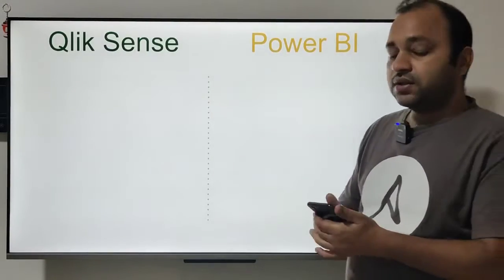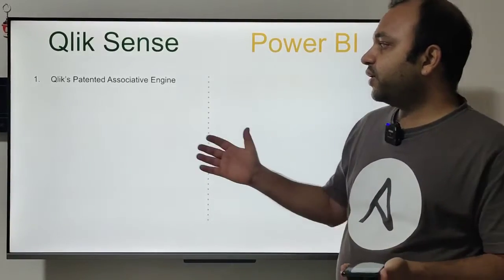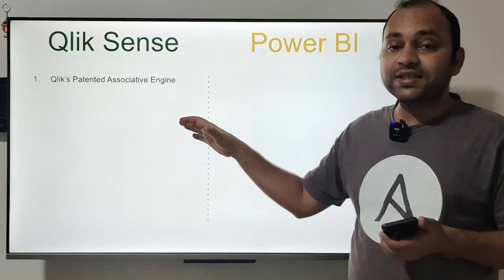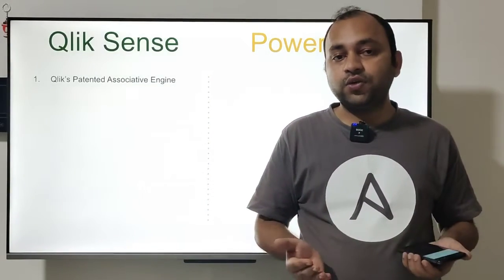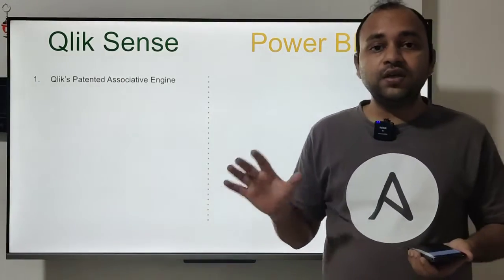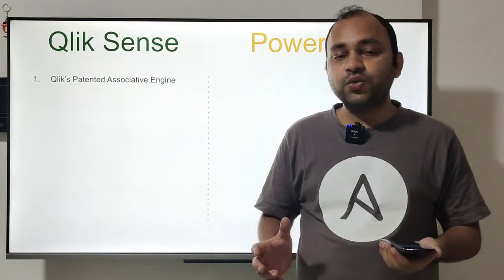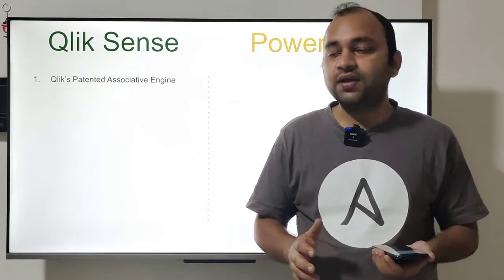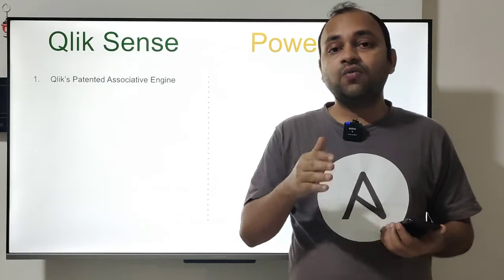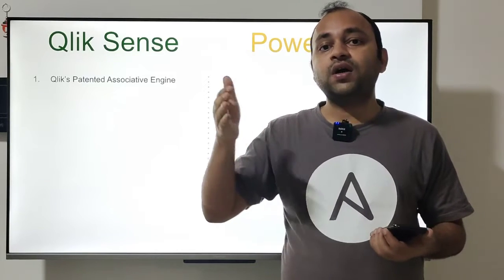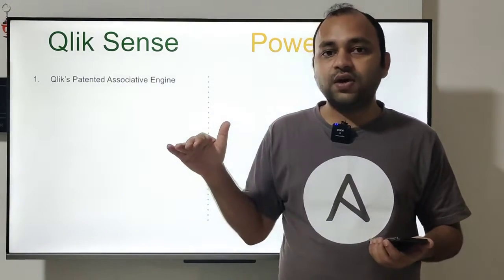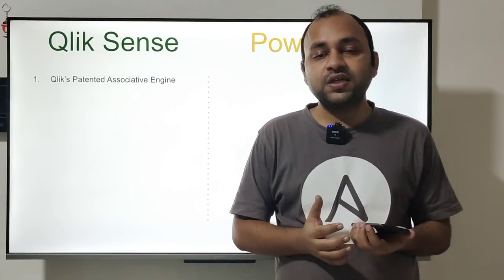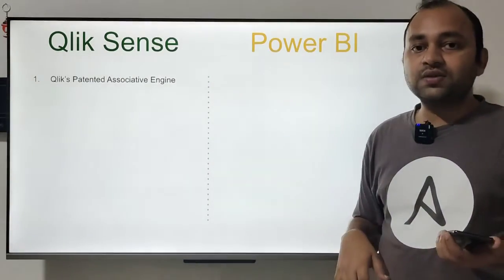First, let's go through Qlik Sense. It has a very important Qlik patented associative engine — that is one of the most interesting things you will find in the Qlik Sense tool. I used it extensively in Qlik View and see the same engine in Qlik Sense. The best part is that you can check data quality and data issues very easily, as it shows associated values based on your selection, and non-associated values get grayed out.